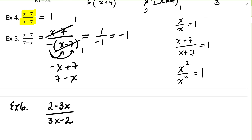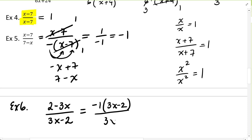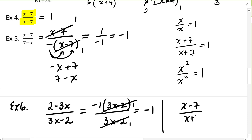In example six, 2 minus 3x and 3x minus 2 are opposite. I can factor out a negative 1 to get 3x minus 2 over 3x minus 2 — these two cancel, leaving negative 1. Also note that x minus 7 and x plus 7 cannot be simplified further, so we leave it like that. Make sure you understand the difference between x minus 7, 7 minus x, and x plus 7.